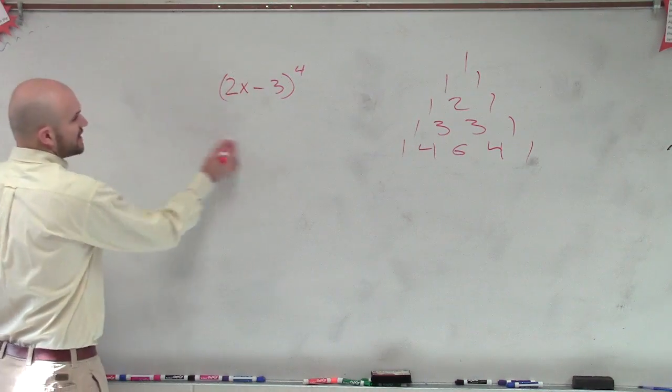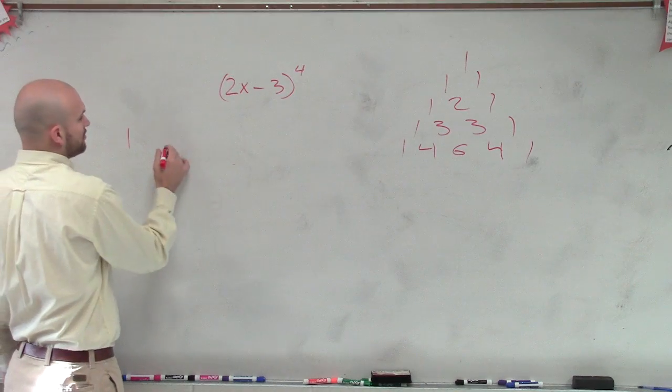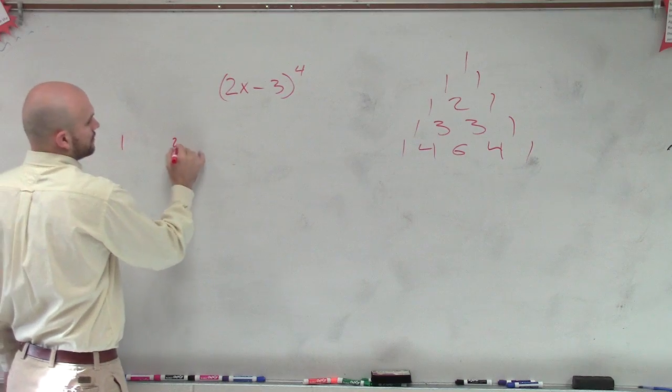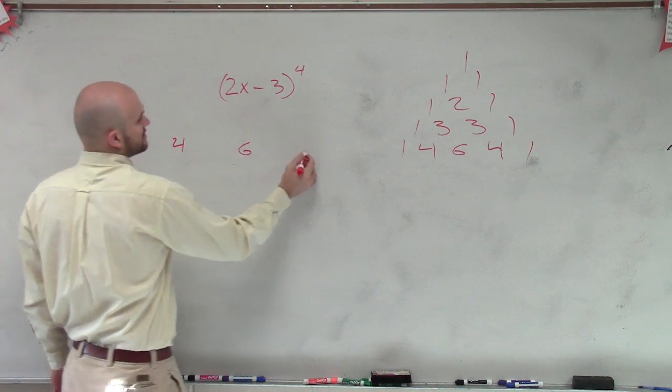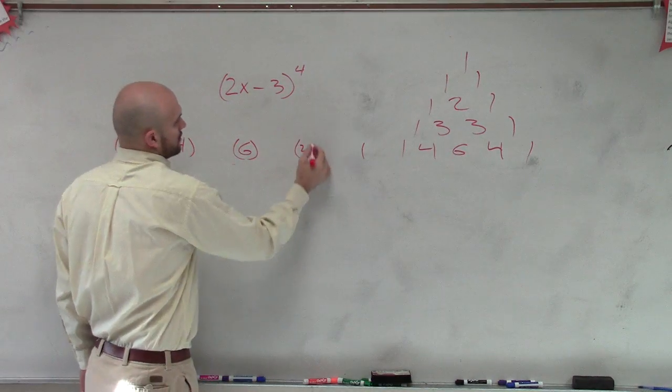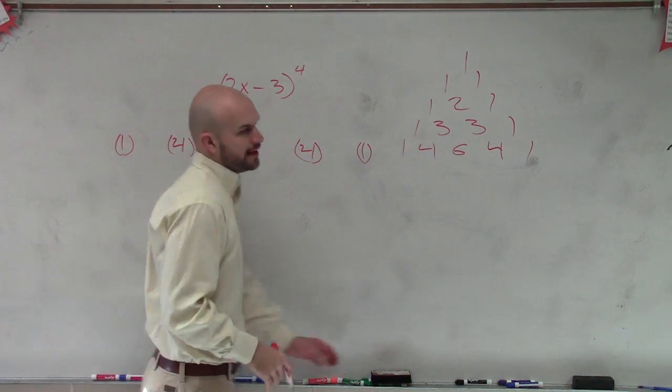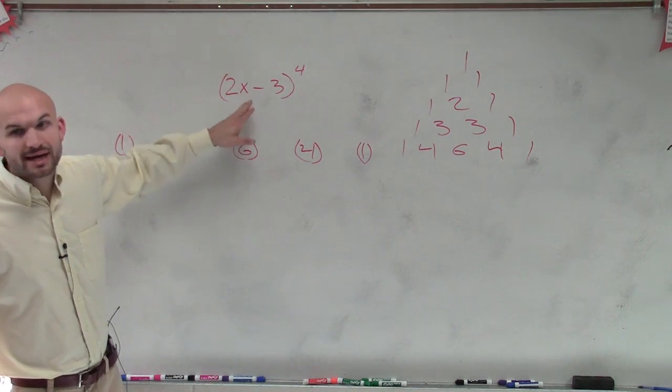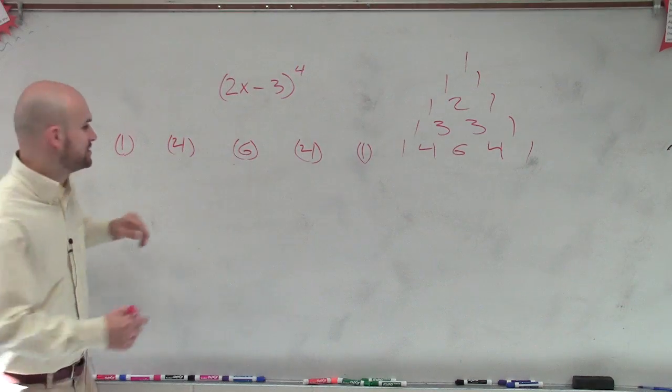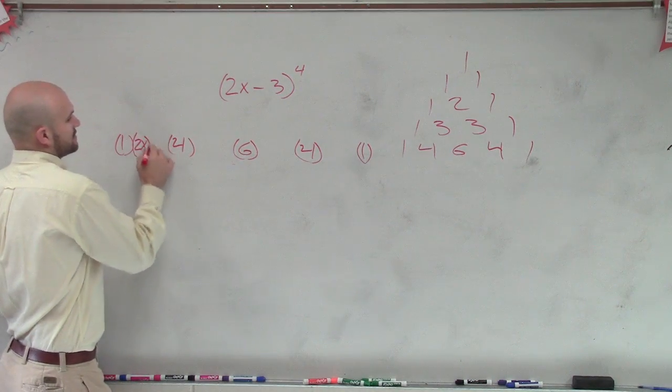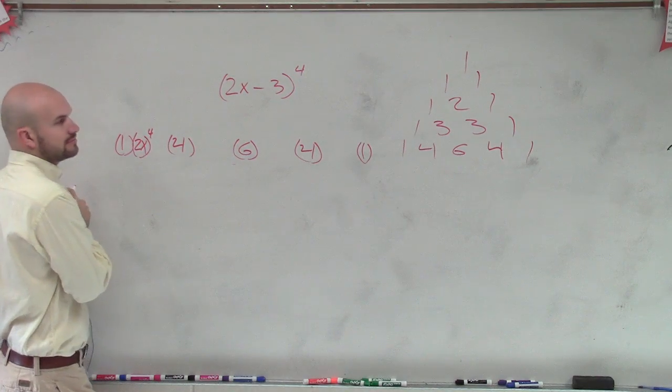So therefore, we know our coefficients are going to be multiplied by 1, 4, 6, 4, and 1. Then we know that on my first term, we've got to keep that to its fourth power. So this one's going to be 2x to the fourth.